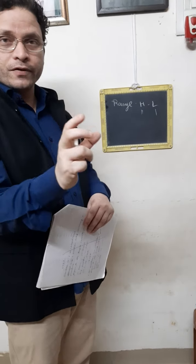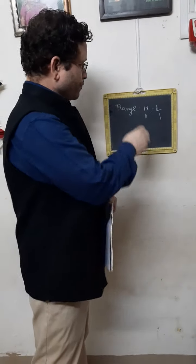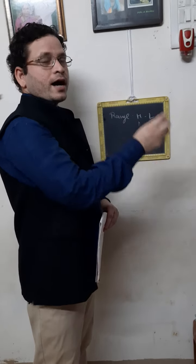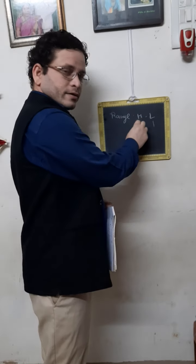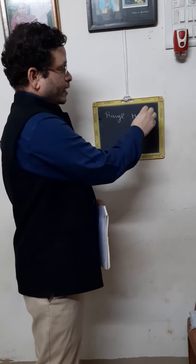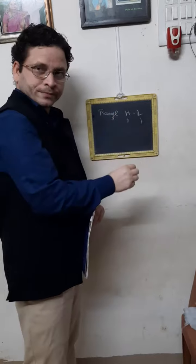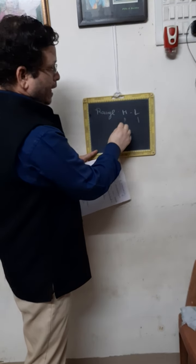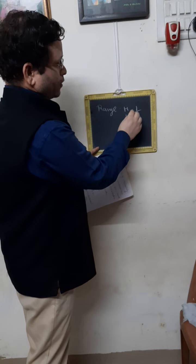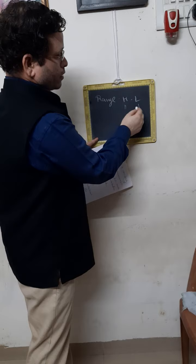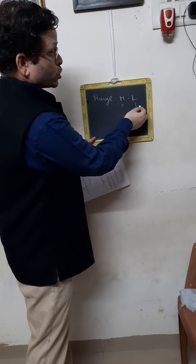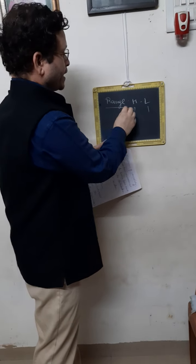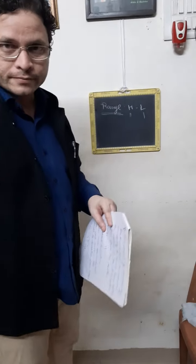Whatever data we have got, in that data we have to observe: if you observe, we get the range. We get one high score and one low score. If you subtract the low score from the high score, you get the range. That's it.